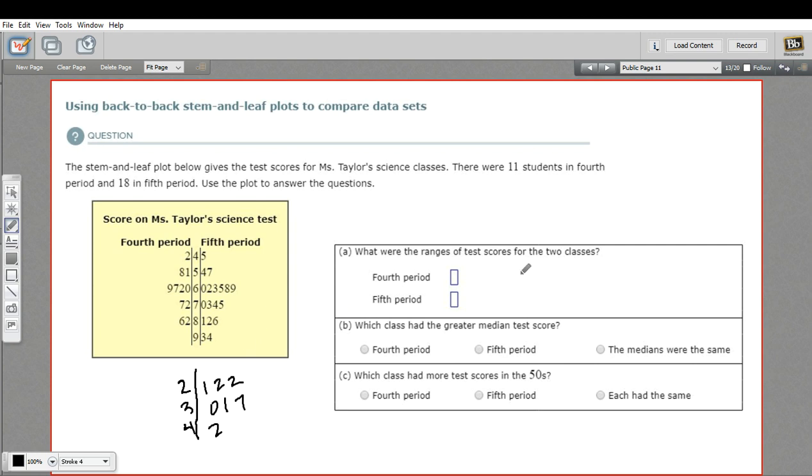A says what were the ranges of test scores for the two classes? So when you want to calculate a range you take a look at the lowest and the highest and you subtract. So for fourth period the lowest is 42, the highest is 86. And then we would just subtract. So we're going to get 44 for a range for fourth period.